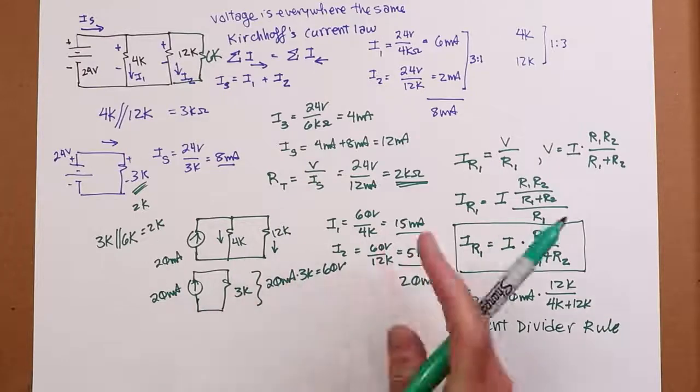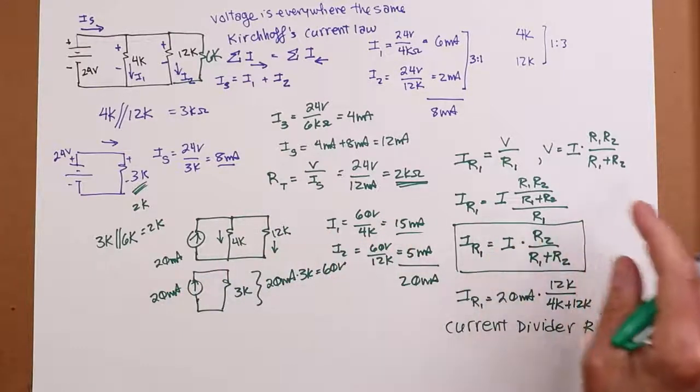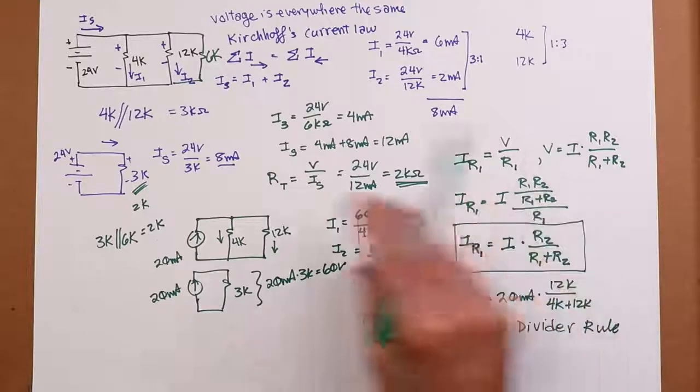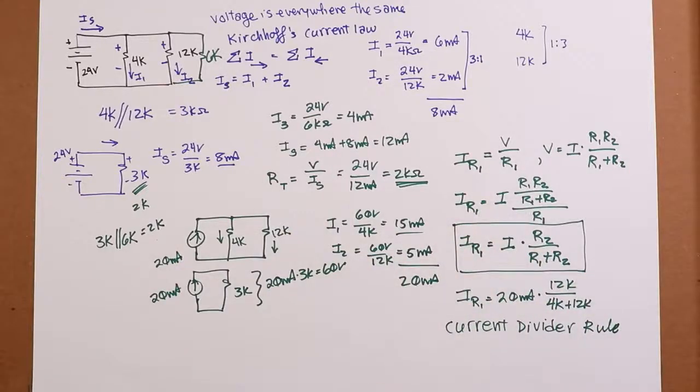Of course, if you have multiples, you could apply it multiple times, just like we could apply the product sum rule multiple times. But if you're just faced with two resistors like this, and you happen to know what the current is, it's a nice, quick way of doing it. That pretty much covers it. The next thing we're going to do is a couple of simulations just to verify what's going on here. See you then.